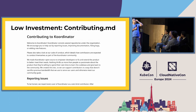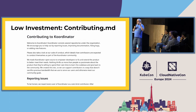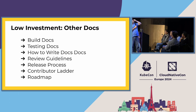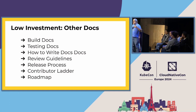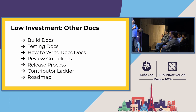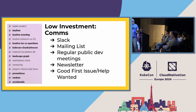Start with low investment activities because many high investment activities depend on them to be successful. The first low investment activity — which the CNCF requires — is to have a basic contributor guide. You'll improve it over time, but you can get basics in there right away. After that, many other low investment activities consist of documentation: a reviewing guide, a guide to communication channels, the contributor ladder, and other things that give potential contributors convenient access to what they can do. The other big part of low investment is maintaining your communication channels and making sure those are staffed.